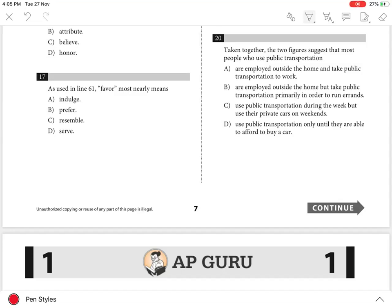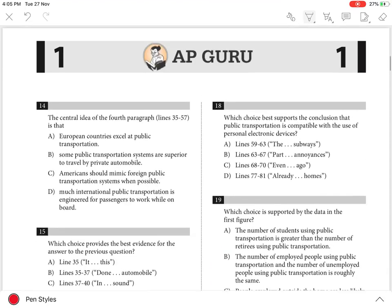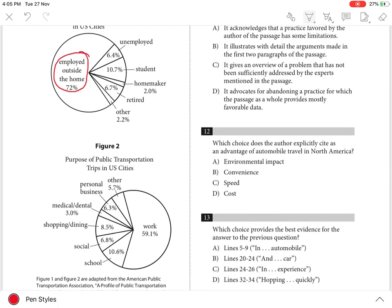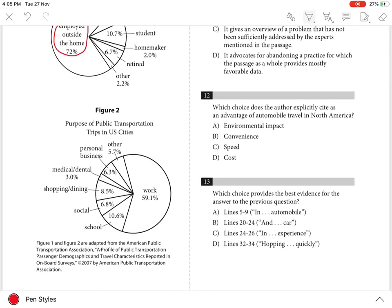Question 20: The best answer is A. In Figure 1, we see that 72% of public transportation passengers are employed outside the home. And in Figure 2, the writer indicates that 59.1% of public transportation trips are for work. Hence, it can be inferred from these figures